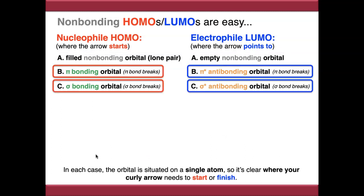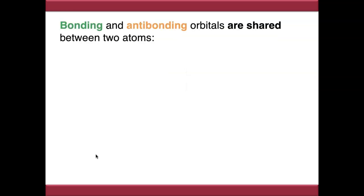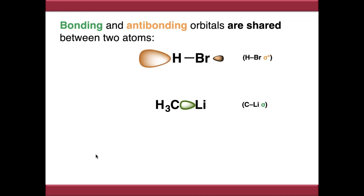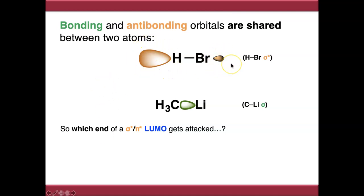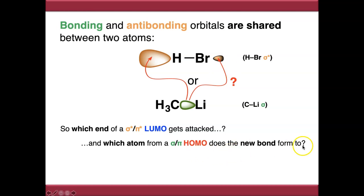The problem arises with pi and sigma bonding orbitals as the HOMO, and pi star and sigma star antibonding orbitals as the LUMO, because all of these orbitals cover two atoms. Taking methyl lithium as nucleophile and HBr as electrophile: which end of the LUMO gets attacked — hydrogen or bromine? And which atom of the HOMO forms the new bond — carbon or lithium? This is the challenge we need to address.